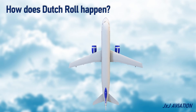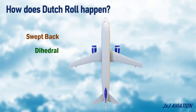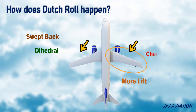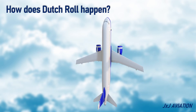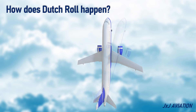We will consider an aircraft having a swept-back dihedral wing design. When this aircraft is in flight, let's say there is a sudden change in the wind direction and the wind is coming in from the right. Now the right wing will generate more lift since more air is flowing along the right wing's cord line compared to the left wing. However, this also causes the drag to increase on the right wing. The drag on the right wing causes the nose to yaw towards the right.